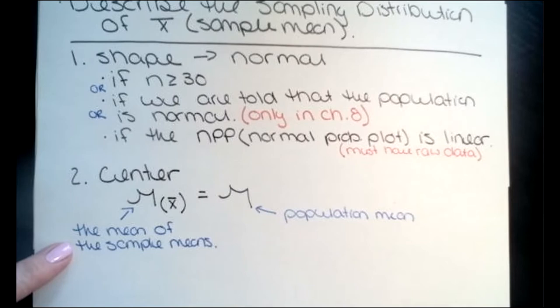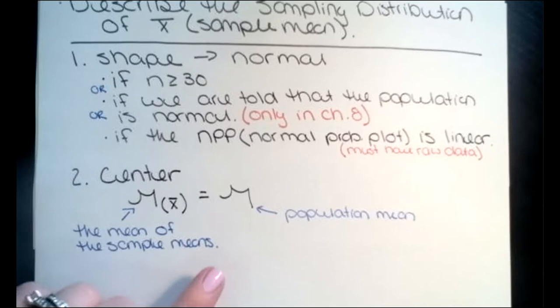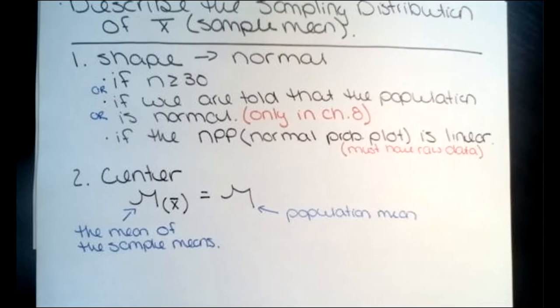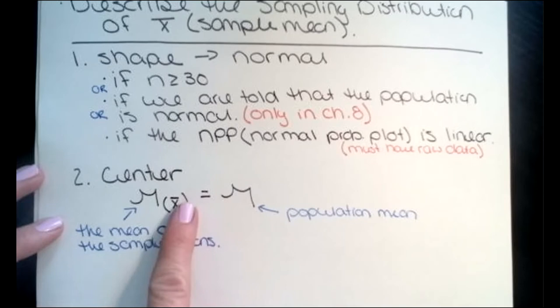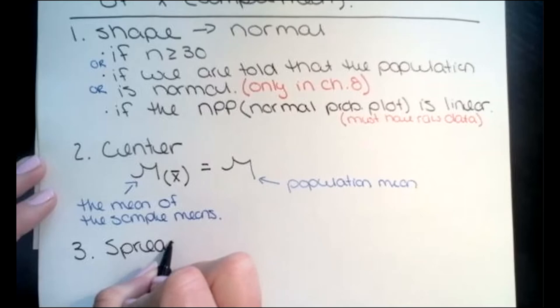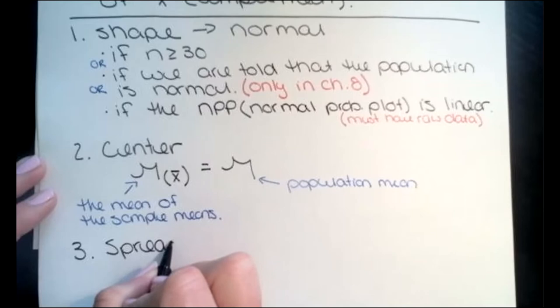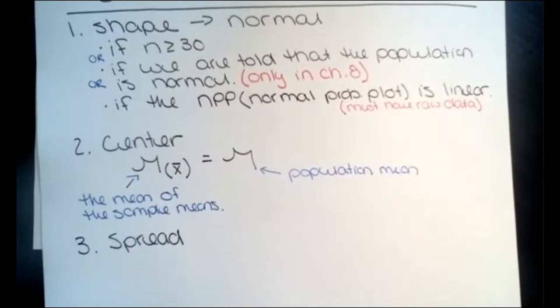Even with an outlier in the sample, the mean is still going to be fairly close to the original population mean. With larger samples, the effect of a single outlier will be smaller and smaller. So the third thing to look at is the spread of our curve — the variation — how spread out are my x-bars, my sample means, from each other.